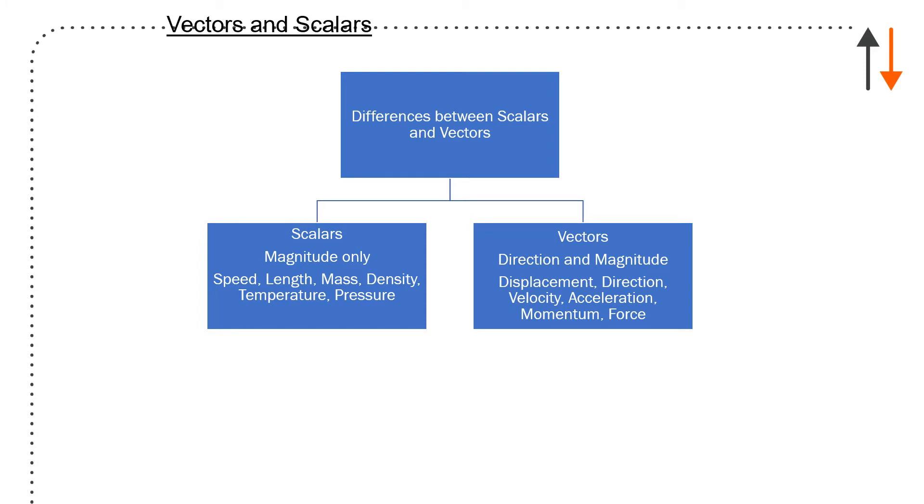We then go to vectors and scalars. And the only difference is that scalars are magnitude only. Speed, length, mass, density, temperature, pressure. We'll go through not all of them, not pressure and temperature. We'll talk about density, though. Vectors are direction and magnitude, displacement, direction, velocity, acceleration, momentum, and force. And those we cover in this course. And it's one of the fundamental ideas of mechanical engineering.